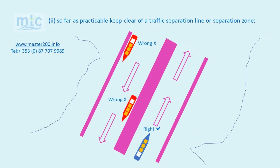Rule 10b2. So far as practical, keep clear of a traffic separation line or separation zone. The red vessels are close to the traffic separation zone and traffic separation line and are therefore incorrect. The blue vessel is clear of the traffic separation zone and the traffic separation line and is correct.